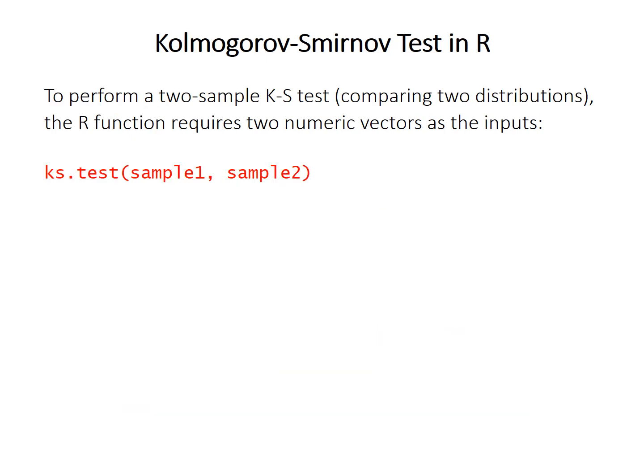The R function for a two-sample KS test is called ks.test, and it requires two numeric vectors separated by a comma as the input — sample one as a numeric vector, and sample two as a numeric vector.